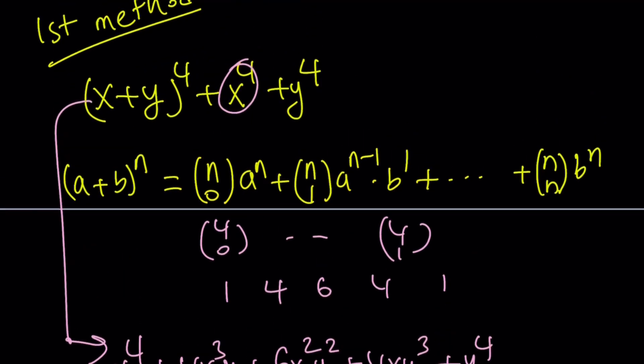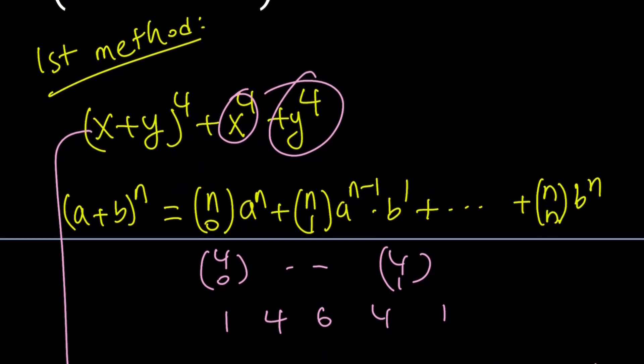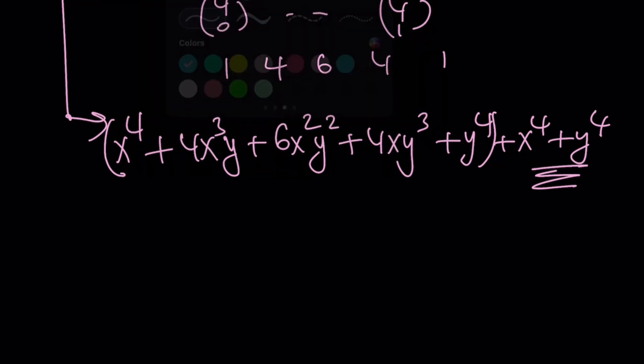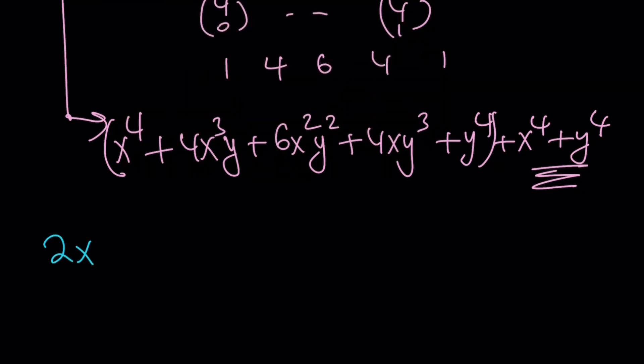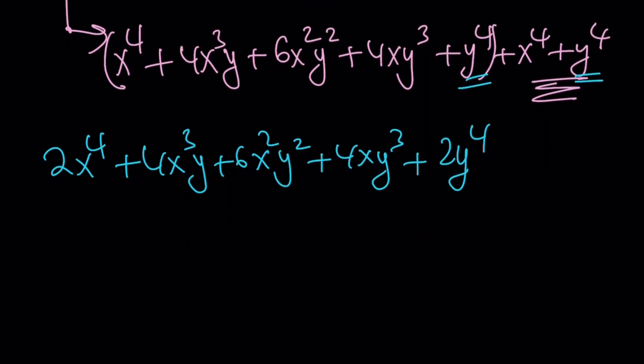But notice that I'm adding x to the 4th and y to the 4th. So that brings me an extra x to the 4th and y to the 4th. Let me just write it for now. This is x plus y to the 4th power, and I just added these two terms at the end. Now, I'm going to combine x to the 4th plus x to the 4th - that's going to give me 2x to the 4th. And then I'll continue: 4x cubed y, 6x squared y squared, plus 4xy cubed, plus y to the 4th plus y to the 4th gives me 2y to the 4th. This is nice because every term is even.